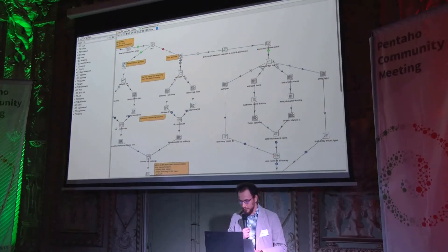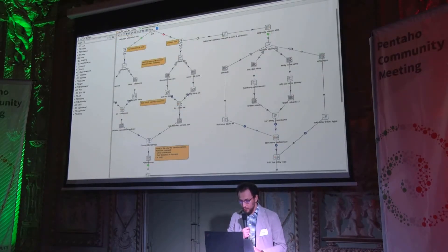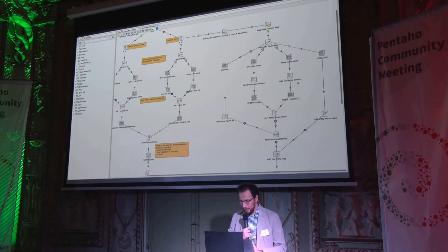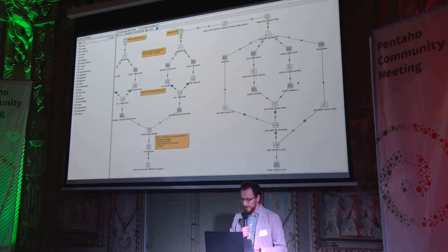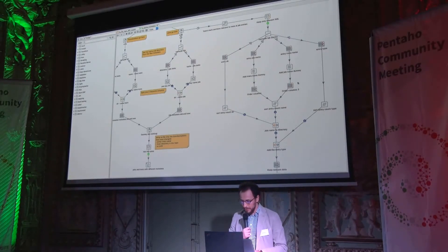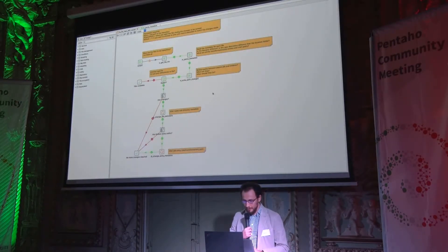In the case of jobs, jobs can call other jobs and other transformations. As such, we need to look at the entries and see which entries are now different — which transformations the file is calling. This will create a list of all the transformations and jobs that the file is calling. Bear in mind, these are the old values, not the new values. We cannot know the new values as of yet, and again, it writes that to a file.